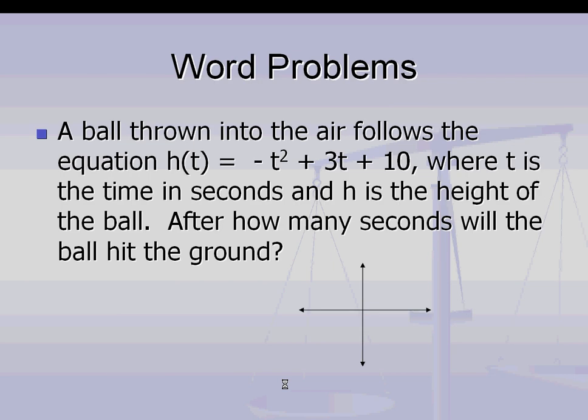A word problem: A ball is thrown into the air following the equation h(t) = -t² + 3t + 10, where t is the time in seconds and h is the height of the ball. After how many seconds will the ball hit the ground? We're going to graph this parabola in our calculator, and we can see that it touches the x-axis in two places. One where we have a negative answer and one where we have a positive answer. We're only concerned about the positive answer because you can't have a negative number of seconds.